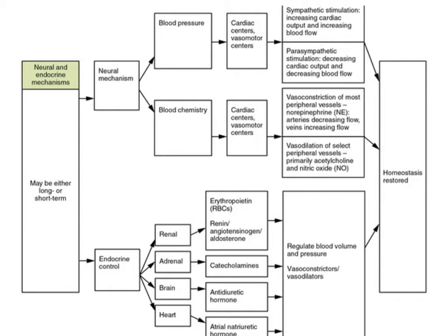The adrenal gland is a hormone-producing gland. The adrenal medulla produces epinephrine and norepinephrine, which are part of a group of hormones called the catecholamines — a term that implies they are made up of amino acids. The adrenal gland also produces aldosterone, which comes from the adrenal cortex.